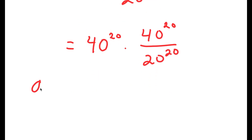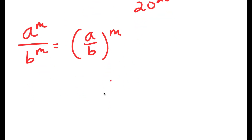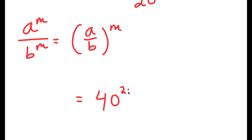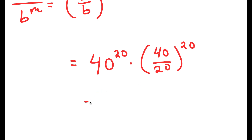Now, if I have something in the form a to the power of m over b to the power of m, this is equal to a over b to the power of m. So 40 to the power of 20 over 20 to the power of 20 is equal to 40 over 20 to the power of 20. And 40 divided by 20 is 2, so I get 40 to the power of 20 times 2 to the power of 20.